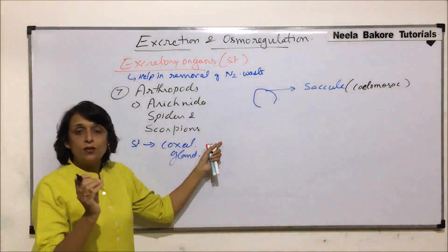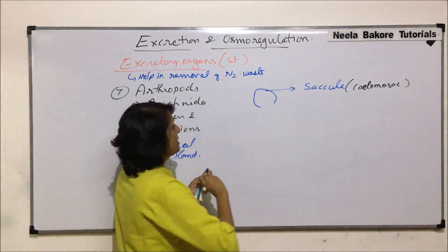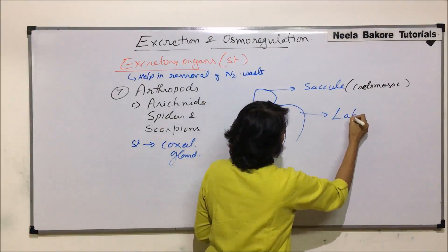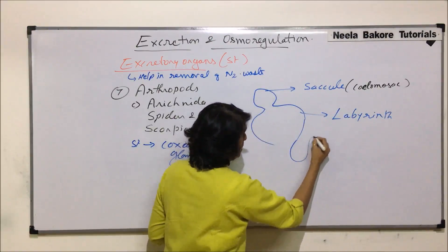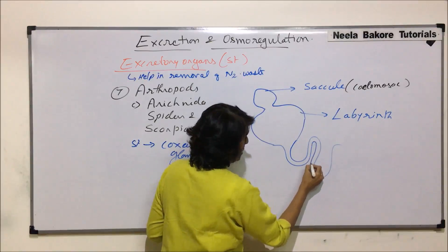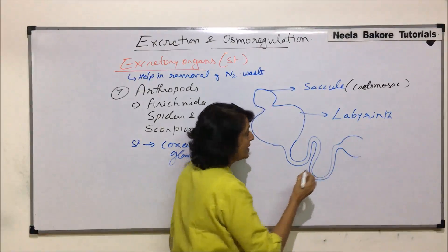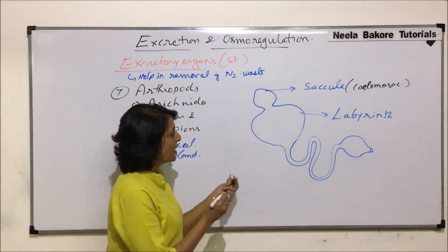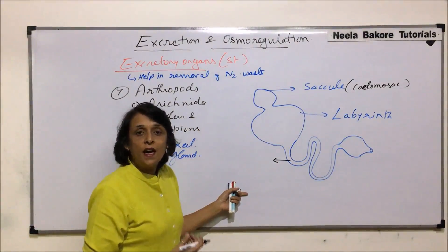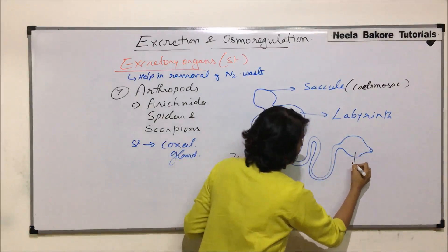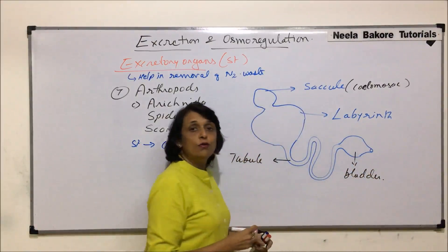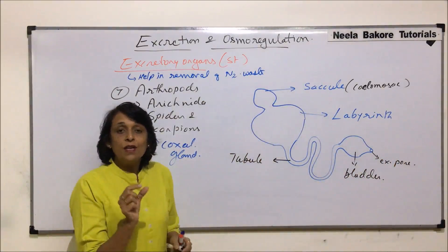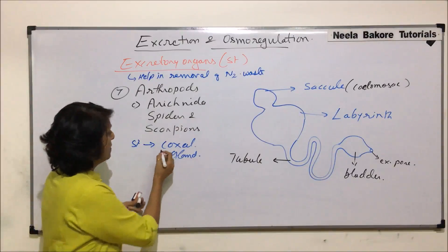The coxal gland is a small sac-like structure called a saccule, which opens into a slightly bigger structure known as the labyrinth. Then there is a coiled tube — a nephric duct or tubule — which carries waste into a small bladder where it is stored, and it finally opens out through the excretory pore. This excretory pore opens at the coxal region of the hind leg, which is why this name has been given to the gland.